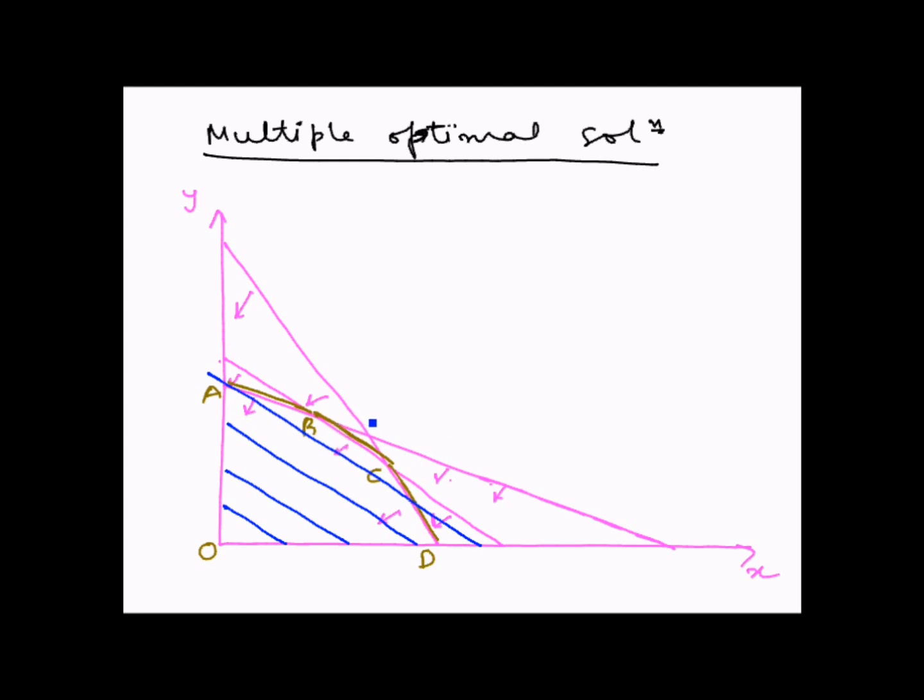You will note that these lines are parallel to the boundary BC, which is represented by this constraint here. So one of the parallel lines representing the objective function will touch the portion BC of the feasible solution region.